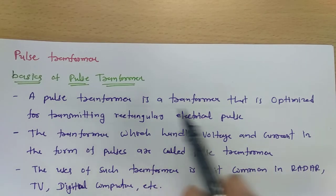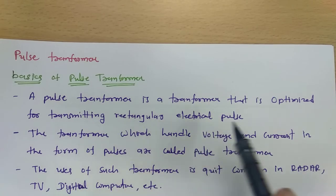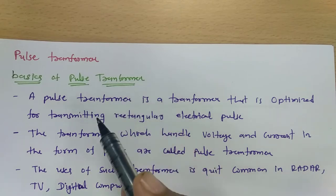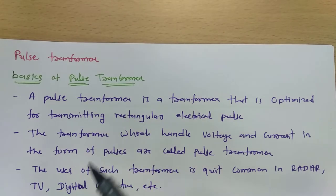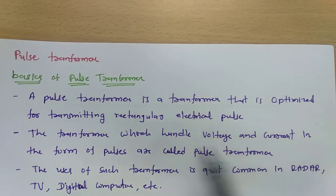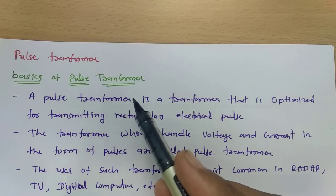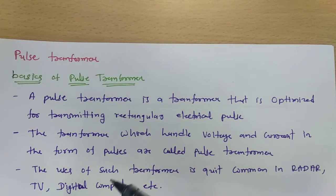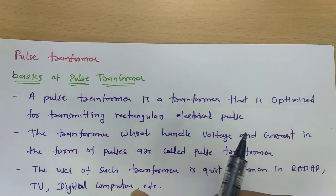A Pulse Transformer is a transformer that is optimized for transmitting rectangular electrical pulses. Usually in a Pulse Transformer, we transmit rectangular electrical pulses from primary to secondary. The transformer which handles voltage and current in the form of pulses is called a Pulse Transformer. The use of such transformers is quite common in Radar, TV, and Digital Computers. Basically, the idea of a Pulse Transformer is to transfer pulses from primary to secondary.